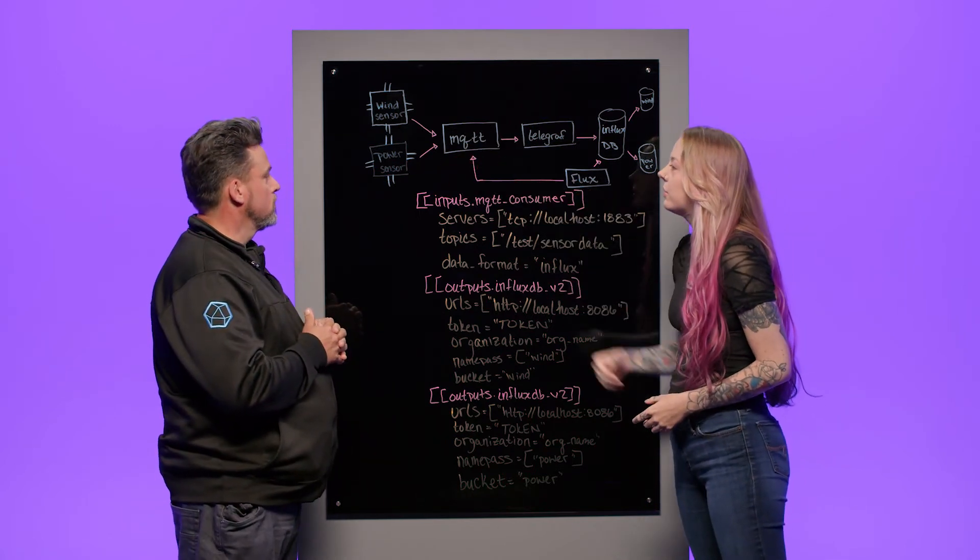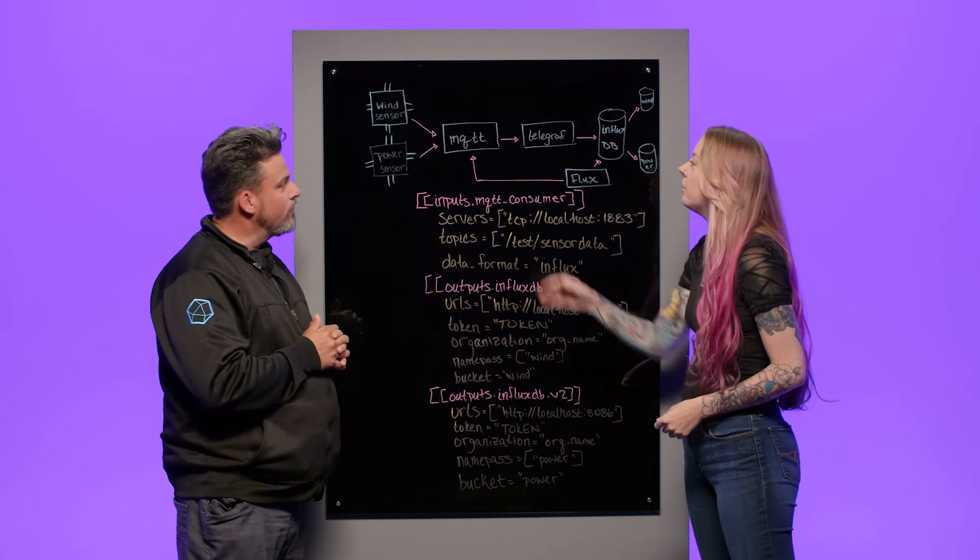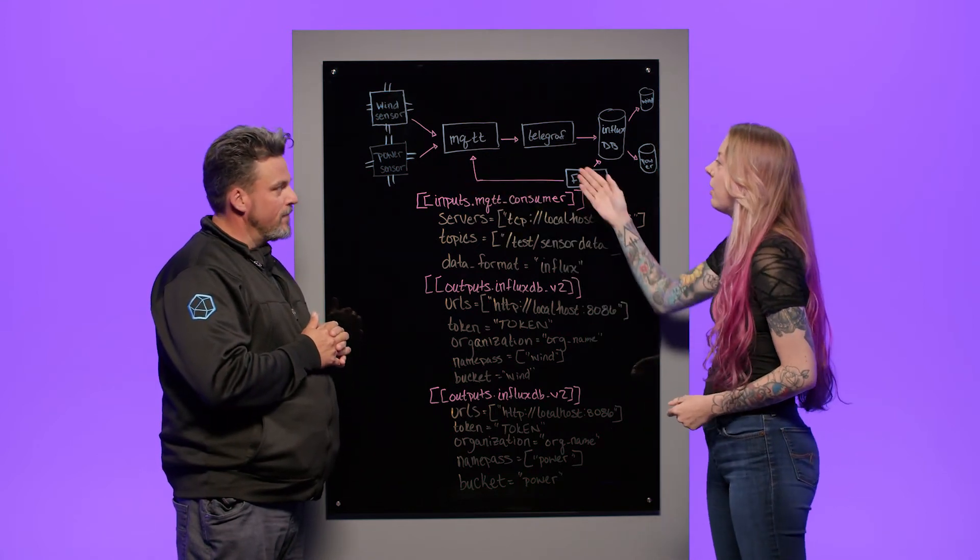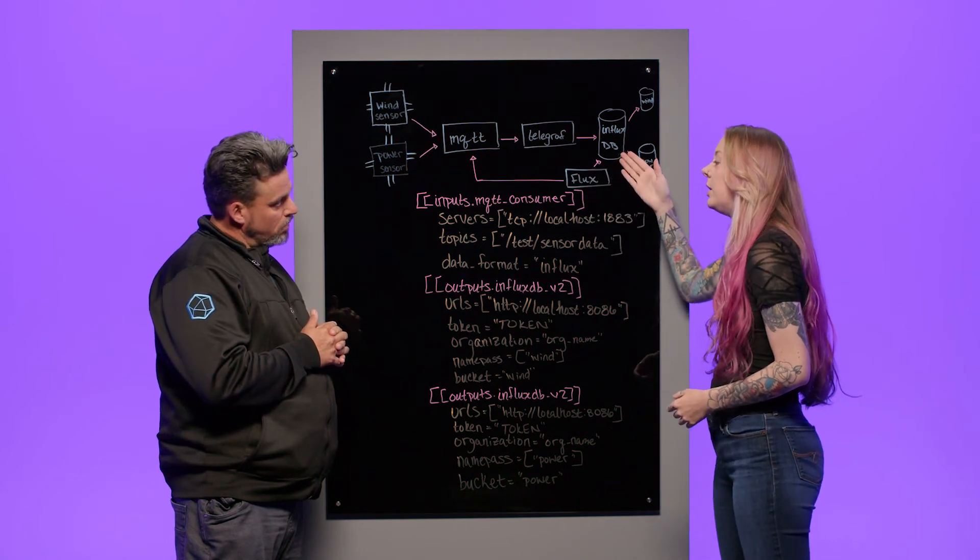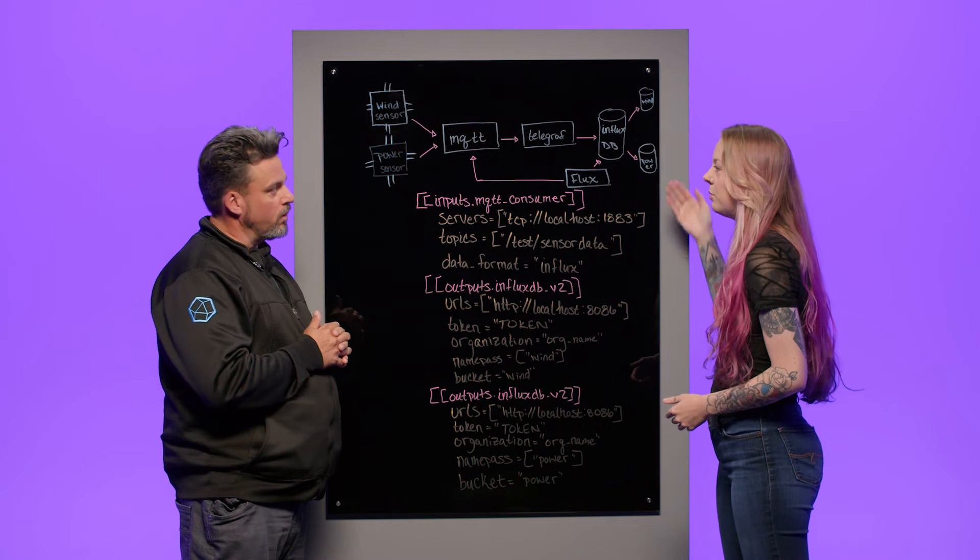I put together a simple example here so you can show how to set up your data. We have a wind sensor and a power sensor, like you were talking about before, publishing to an MQTT broker. Telegraph will then subscribe to that broker, send your data to InfluxDB, and sort it into the proper buckets as we have wind and power.